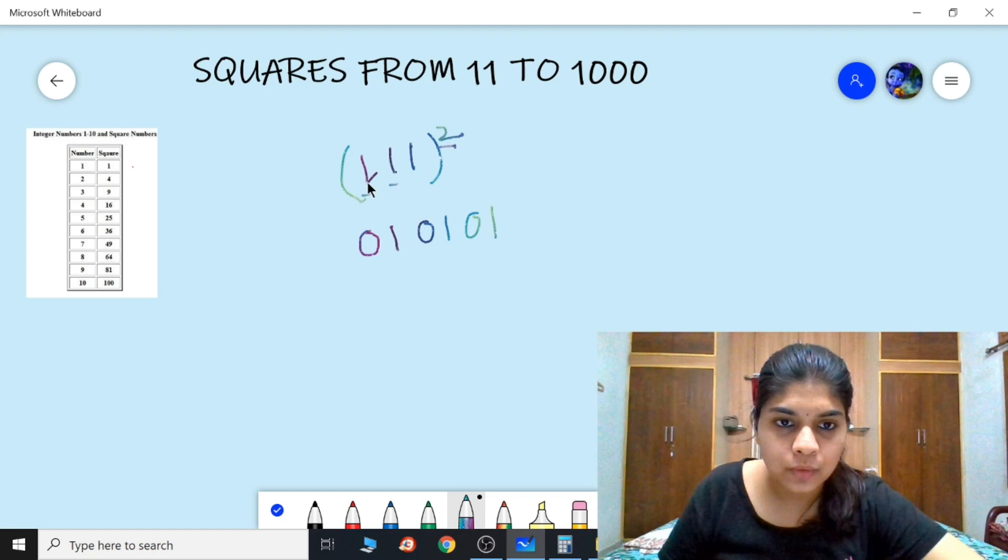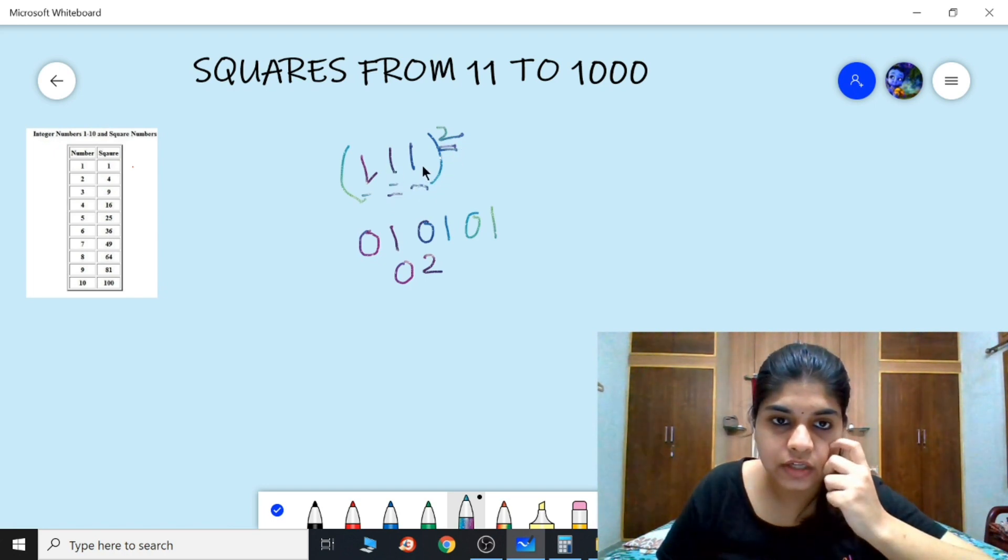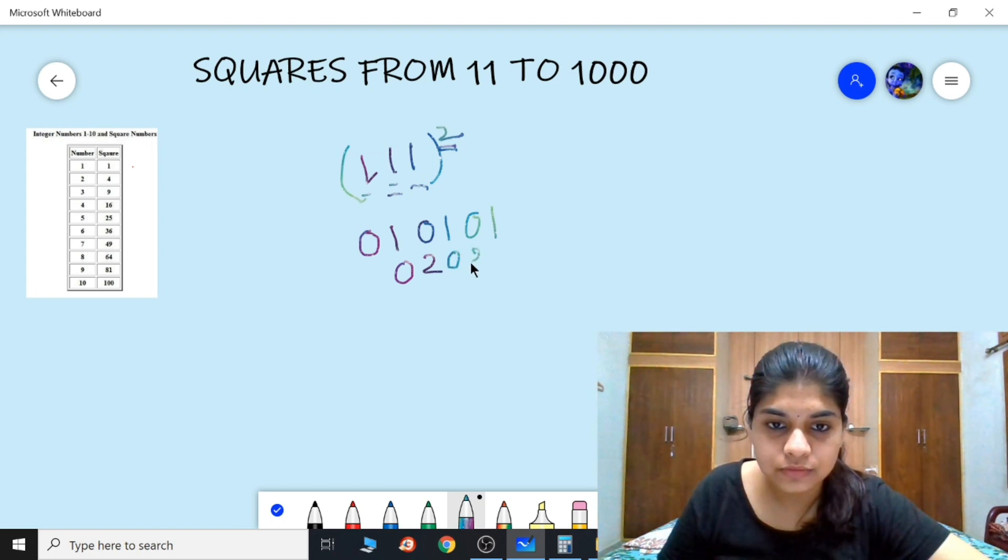Now we need to multiply first and second digit and then 2. That is 1 into 1 is 1, into 2 is 2, so 02. Next, these two, this one and this one and 2. That is 1 into 1 into 2, it's 02.